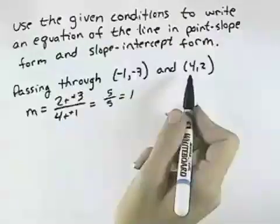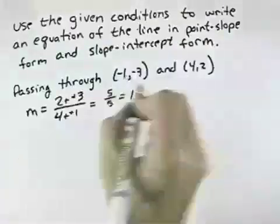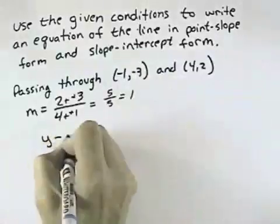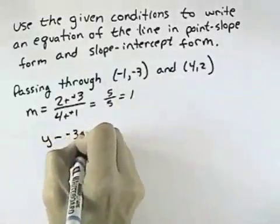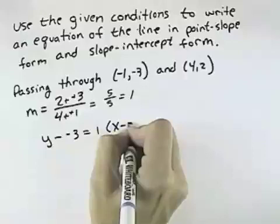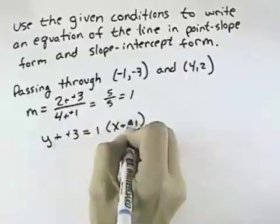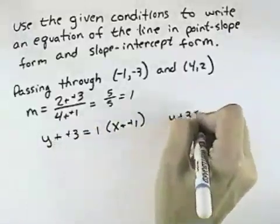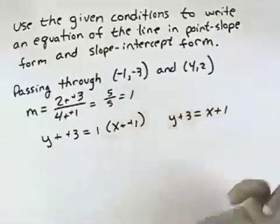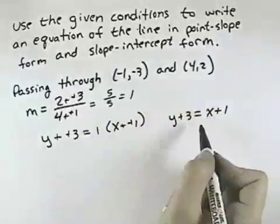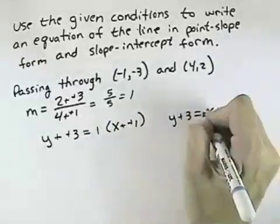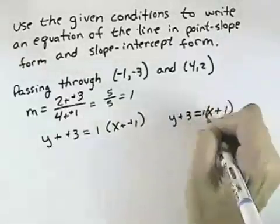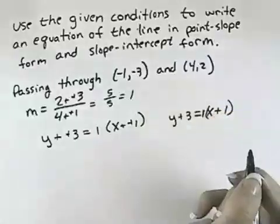Now, using either of the original points, I'll use the first one. I can write this equation as y minus a negative 3 equals 1 times x minus a negative 1, each of which becomes plus a positive, so that my equation becomes y plus 3 equals x plus 1. And that would be my equation in slope-intercept form. I could leave the 1 out in front to show that the slope is 1 times x plus 1.